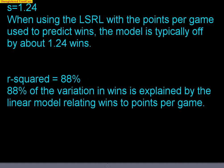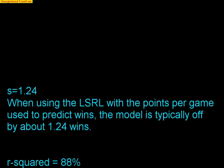Interpret R-squared: 88% of the variation in wins is explained by the linear model relating wins to points per game. Notice it's the percentage of variation in the Y variable. You could also say 88% of the variation in wins is explained by the variation in points per game. Either phrasing works — just use the script.